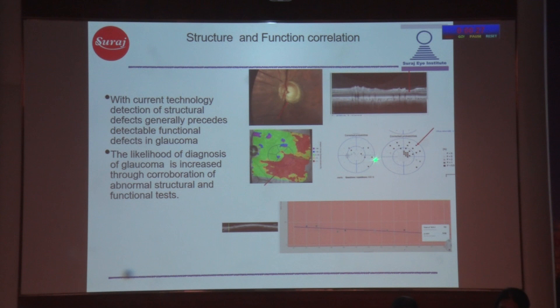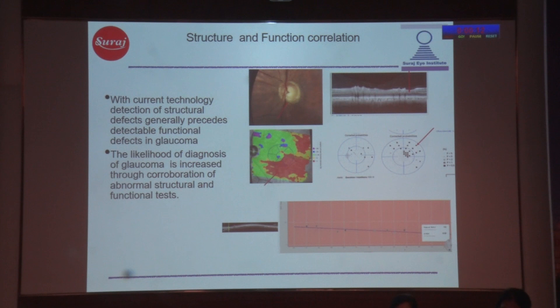This is a patient where we've done multiple retinal nerve fiber layer values over a long period of time, and you get this regression here that shows you how the deterioration of the retinal nerve fiber layer has taken place. But every time you do a retinal nerve fiber layer, please make sure to check the segmentation, because segmentation can change from one test to another. Therefore, we will always look at the retinal nerve fiber layer like this.